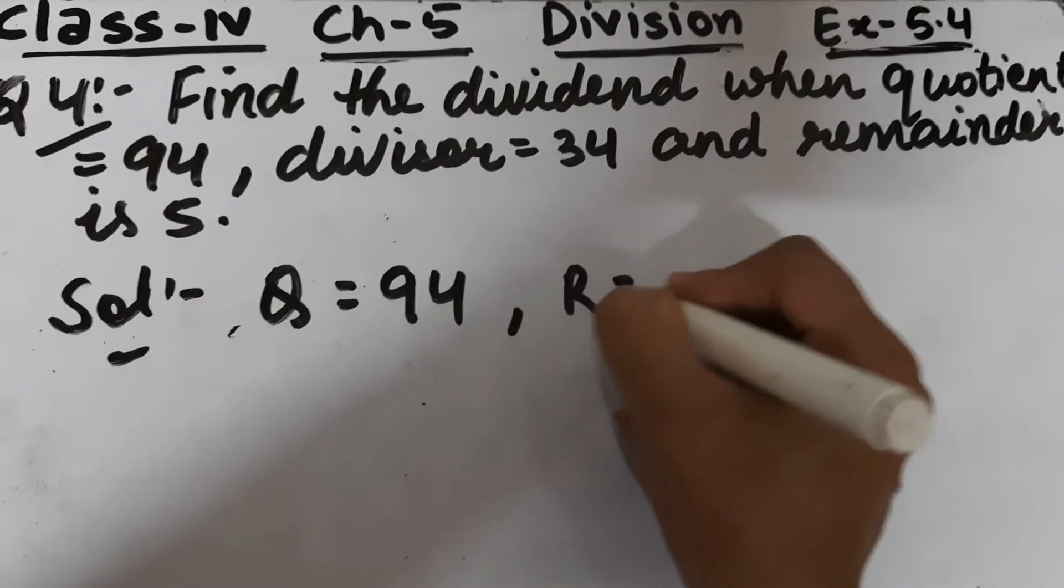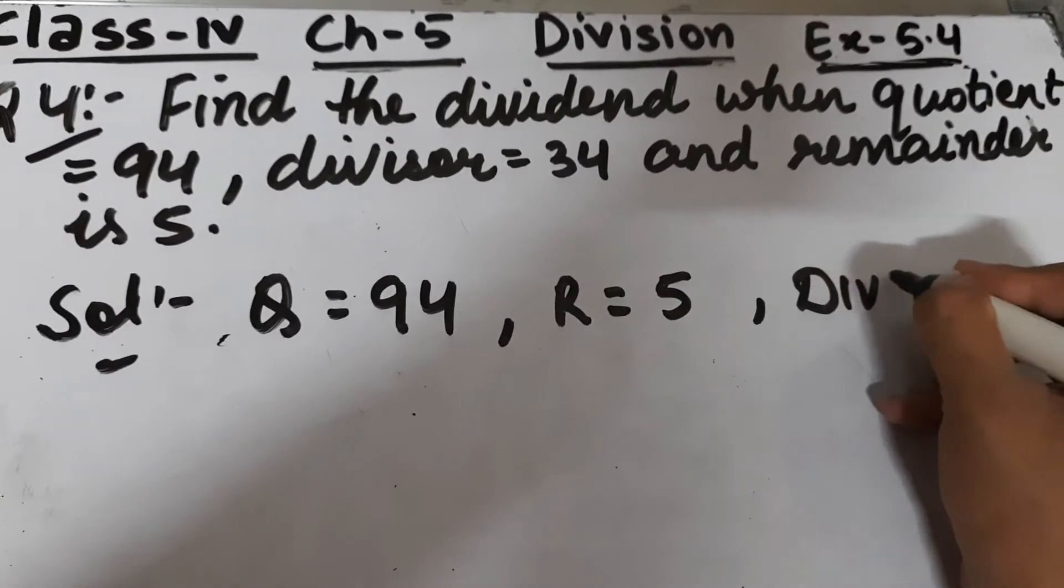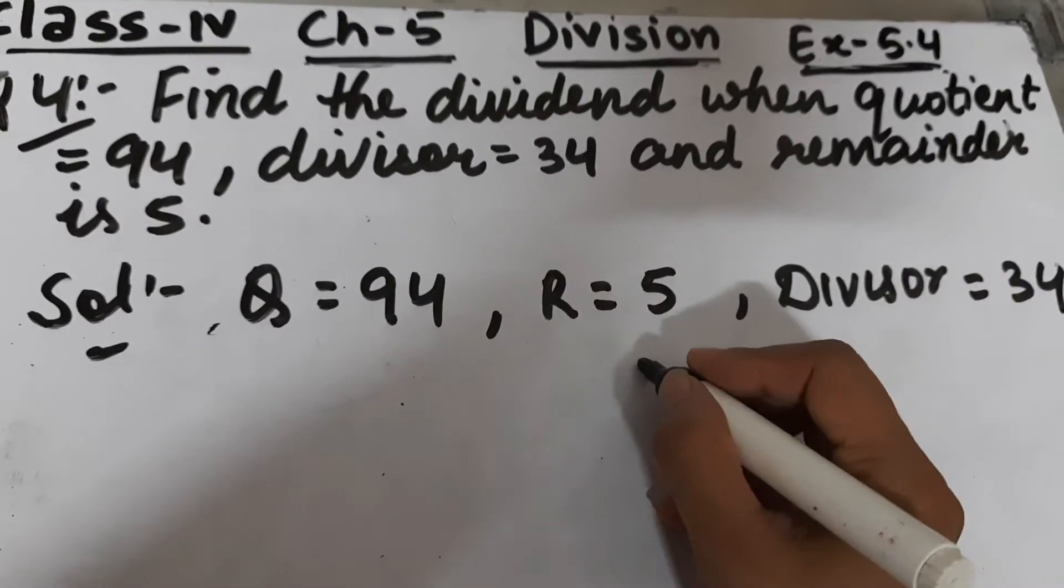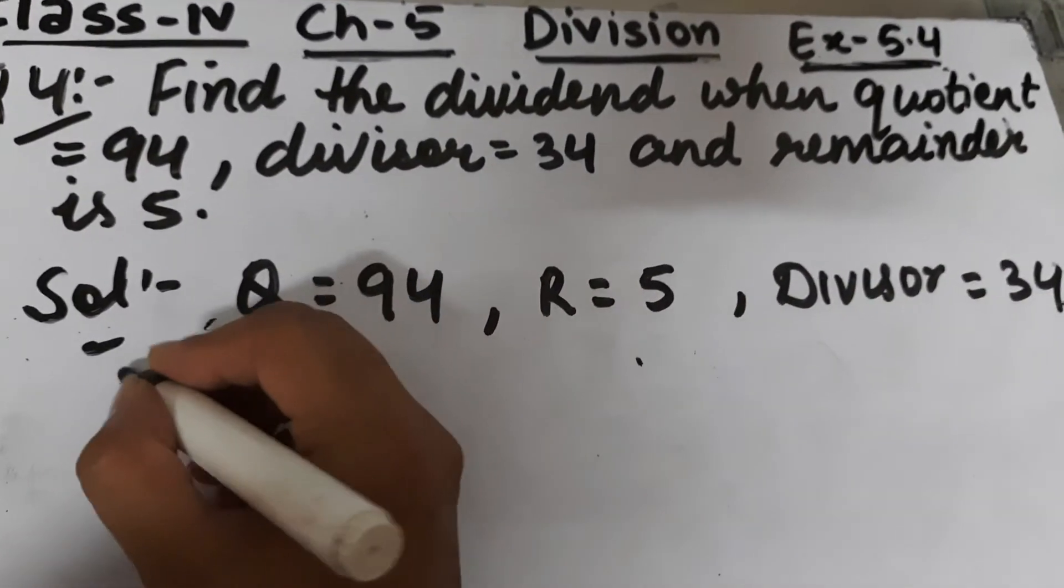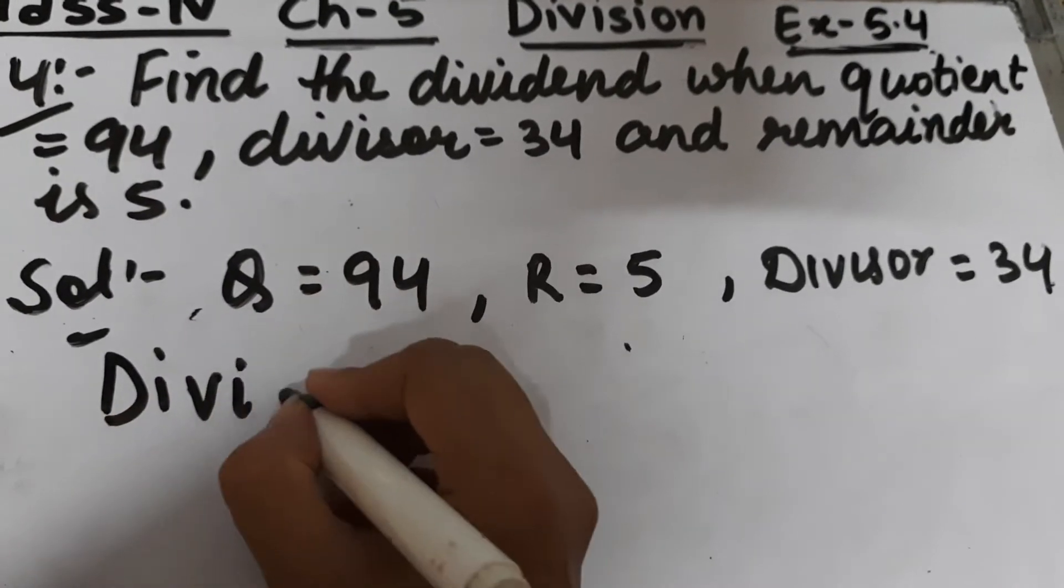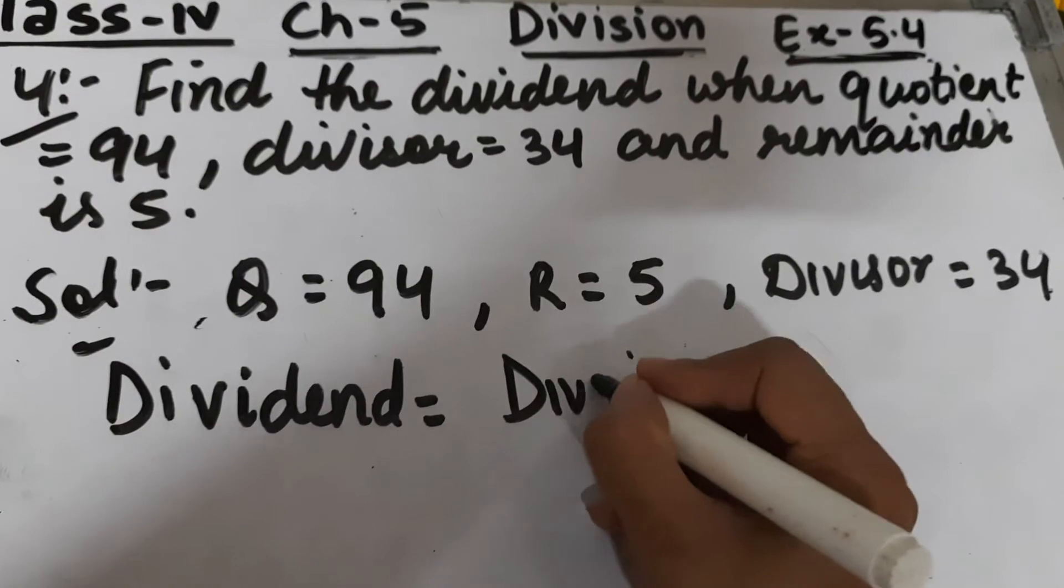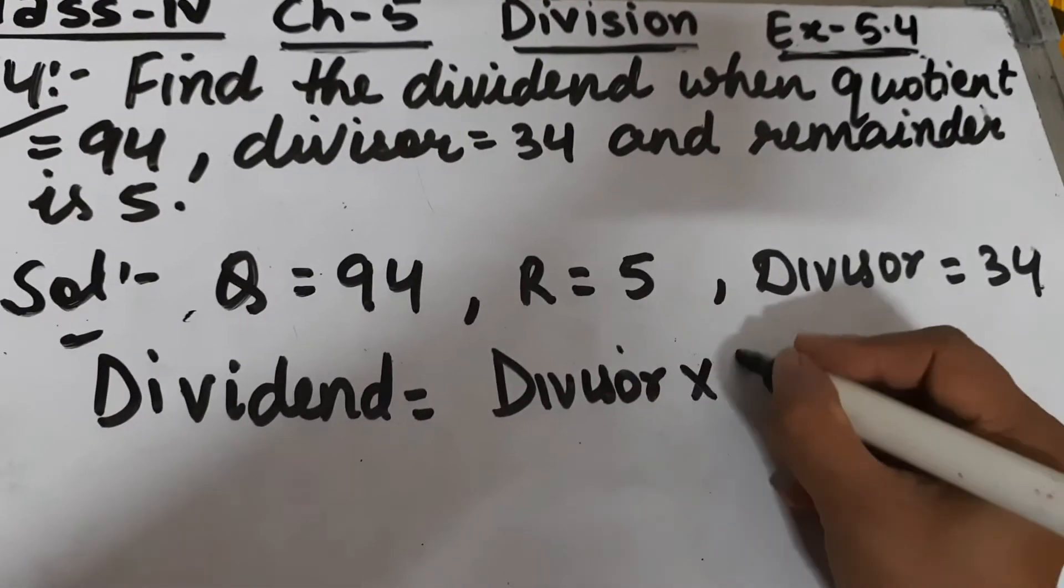Quotient is given as 94, remainder is 5, and divisor is 34. We have to find the dividend, and we know that dividend equals divisor multiplied by quotient plus remainder.